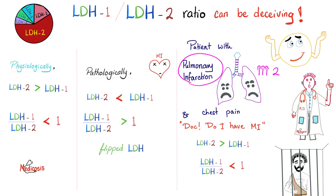Do not just look at relative terms — look at absolute values as well. Normal LDH1 should be around 50 international units per liter. If this patient's LDH1 is 150, that is three times normal — you cannot dismiss myocardial infarction just because the ratio didn't flip. Check absolute values.